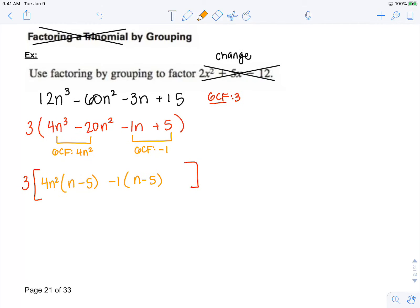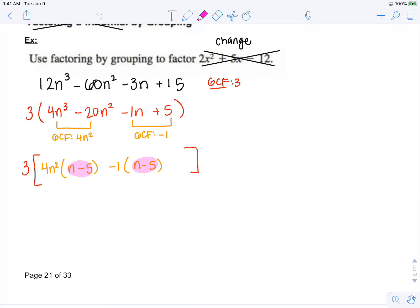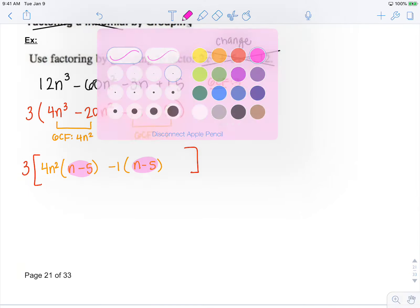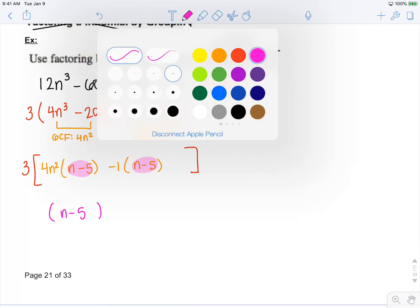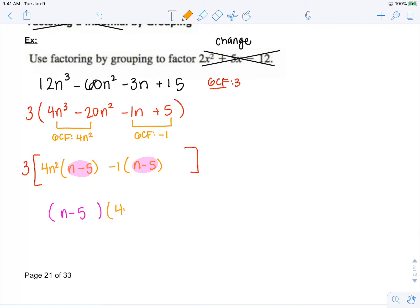So now here is my binomial GCF of n minus 5. If I factor that out, I have n minus 5. And what's going to be left over is 4n squared minus 1. Don't forget that GCF of 3 stays on the outside.